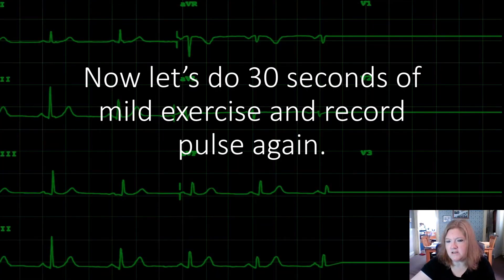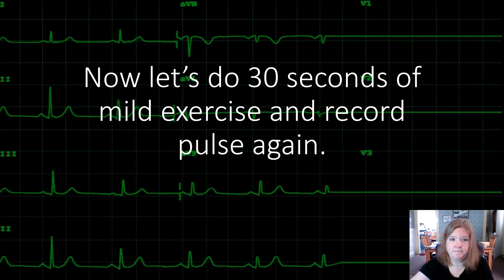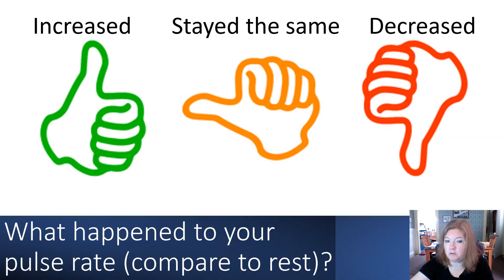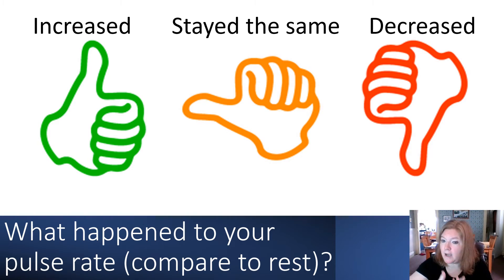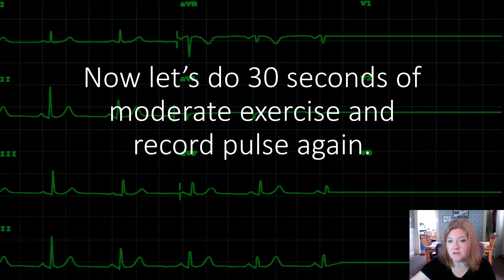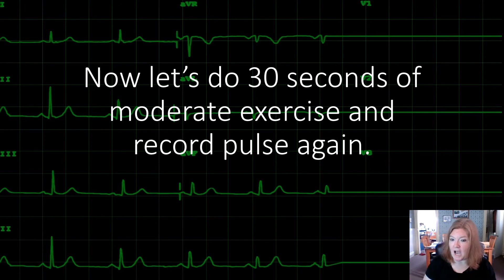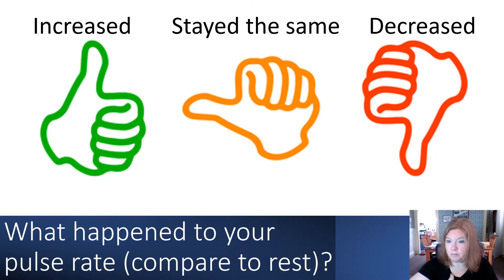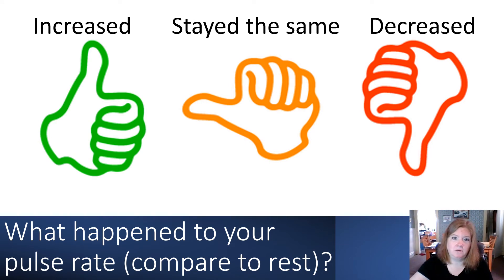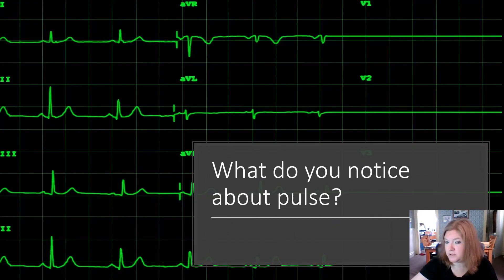Now we'll do 30 seconds of mild exercise — just walking — and record our pulse again. Did it increase, stay the same, or decrease compared to your resting pulse? Then we'll do 30 seconds of moderate exercise: either jumping jacks or jogging in place. Check your pulse again. What happened this time compared to your resting heart rate? What do you notice about pulse?